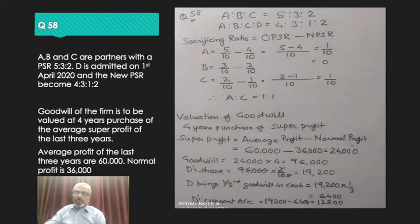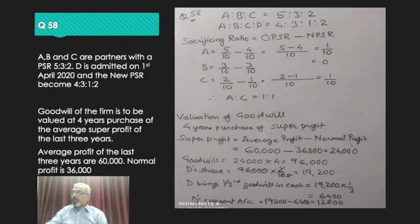In this question, we can see A, B and C are three partners with a profit sharing ratio of 5:3:2. D is admitted on 1st April and the new profit sharing ratio becomes 4:3:1:2. So we have the old ratio and the new ratio, and now we will calculate the sacrificing ratio.